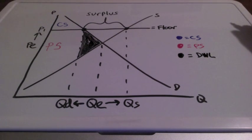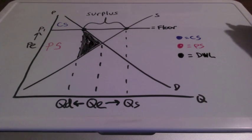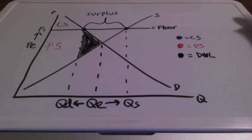Dead weight loss, once again, is a loss of consumer and producer surplus when the market was at equilibrium.